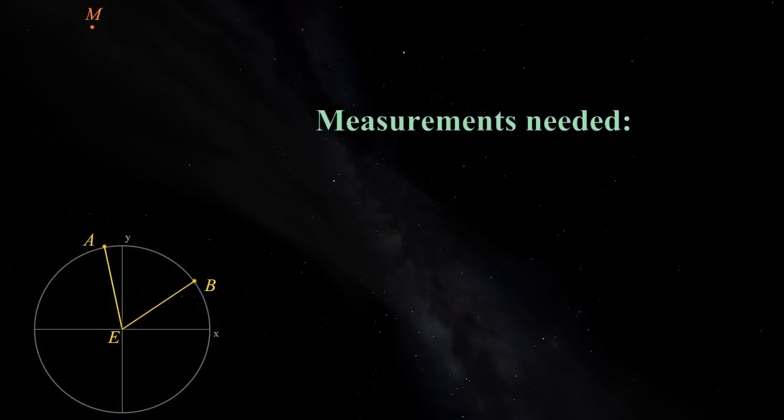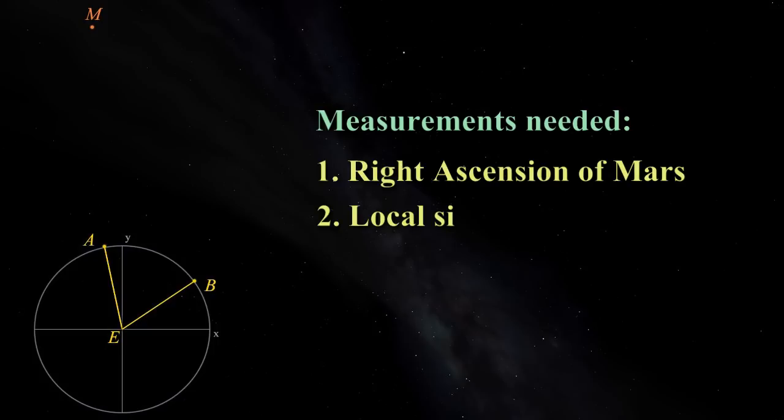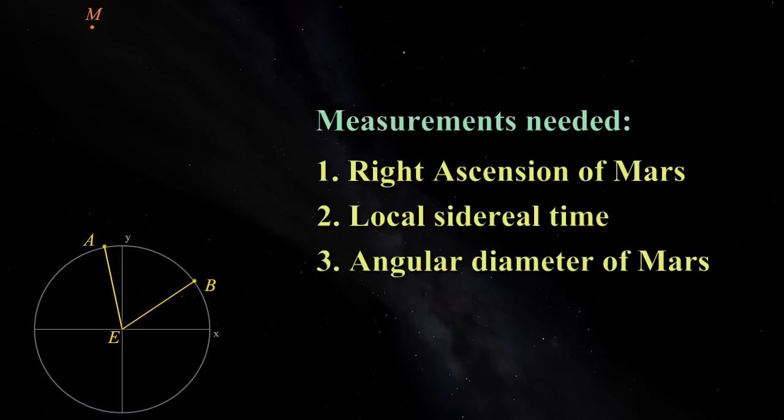We only need three measurements for our distance calculations, but Alice and Bob will both take them. We need the right ascension of Mars from their locations. We need the local sidereal time of each observation. And we need to measure the angular size of Mars at the time of observation.